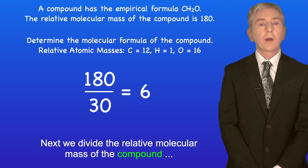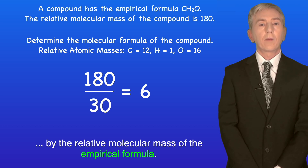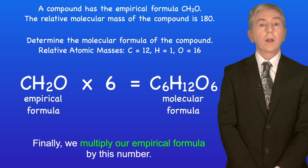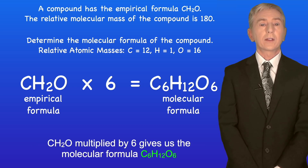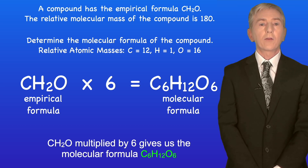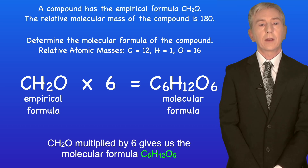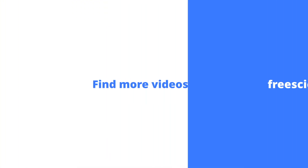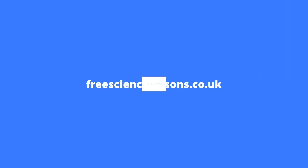Next we divide the relative molecular mass of the compound by the relative molecular mass of the empirical formula: 180 divided by 30 gives us a value of 6. Finally we multiply our empirical formula by this number, so CH2O multiplied by 6 gives us the molecular formula C6H12O6. In the next video we'll look at how to calculate the empirical formula from reacting masses.